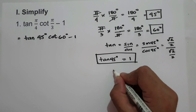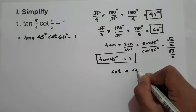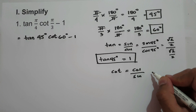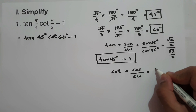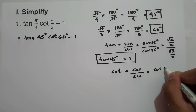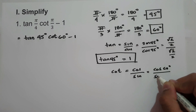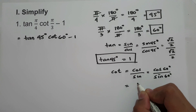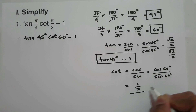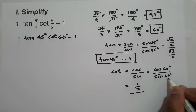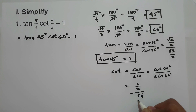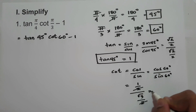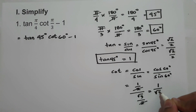And the value of cotangent is cosine over sine. So if we have cotangent 60, we are going to have cosine 60 degrees over sine 60 degrees. Cosine 60 is 1 half, and sine 60 degrees is square root of 3 over 2. Let us cancel, and we have 1 over square root of 3.